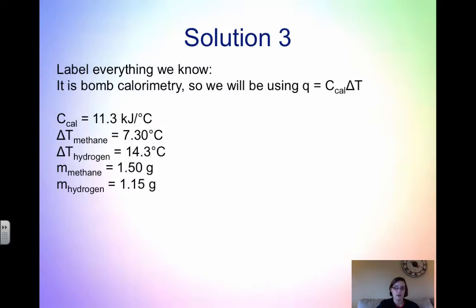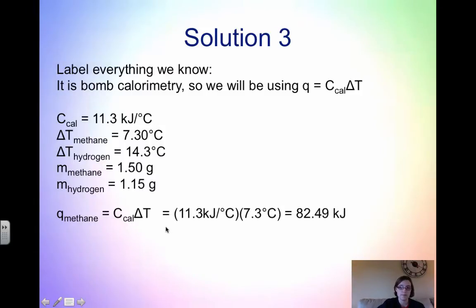To start, we want to find the heat of methane, so how much heat is released when we look at the methane combusting. We take the calorimeter constant times the change in temperature. The calorimeter constant was 11.3 kilojoules per degree Celsius and the change in temperature was 7.3 degrees Celsius. Notice our degrees Celsius cancels and we get 82.49 kilojoules.